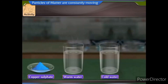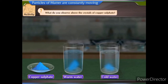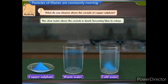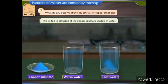Now try this activity. Add a crystal of copper sulphate into a glass of hot water and also to another glass containing cold water. Do not stir the solution. Allow crystals to settle at the bottom of the beaker. What do you observe above the crystals of copper sulphate? The clear water above the crystals is slowly becoming blue in colour.